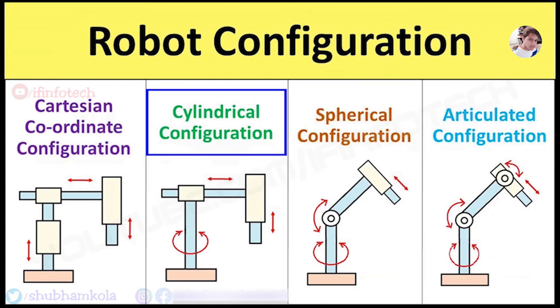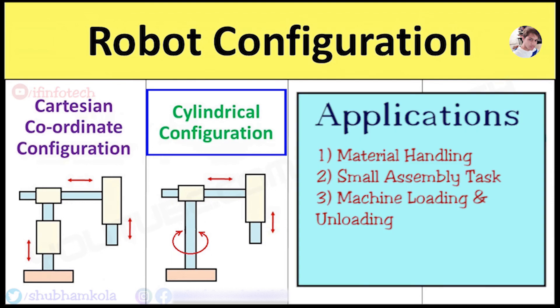The next is Cylindrical Configuration. As you can see in this figure, it consists of 2 prismatic joints perpendicular to each other and one revolute joint mounted on rotary axis. The difference with Cartesian Configuration is 1 prismatic joint is replaced by revolute joint. Vertical column carries arm assembly that moves up and down and rotates about the column. The cylindrical configuration is used in material handling, small assembly tasks, machine loading and unloading.